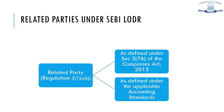Now let us understand who all are Related Parties under SEBI LODR. It is just an extension because SEBI LODR states that Related Parties mean as defined under the Companies Act, which is Section 2(76), and Related Parties under Applicable Accounting Standards. Let us first see the exclusion list which we can infer from the definition of Related Parties under the Companies Act 2013, which to some extent may also be considered as the exclusion list under the LODR.